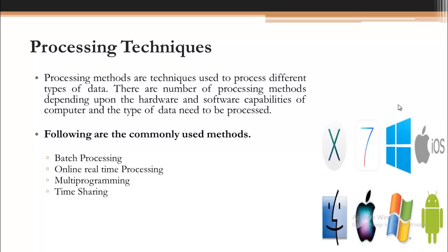In order to make the computer system perform those tasks and jobs which we want it to do, there are different processing techniques adopted by the operating system. The basic task of a computer system is to process data and information — different types of data processed according to instructions provided by the user or programmer. The most common processing techniques are batch processing, online real-time processing, multi-programming, and time sharing.